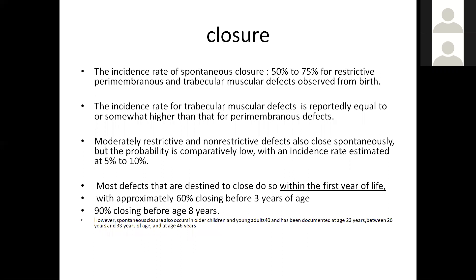Coming to closure rates: the incidence of spontaneous closure is about 50–75% for restrictive perimembranous and trabecular muscular defects. The incidence of spontaneous closure for trabecular muscular defects is reportedly equal to or somewhat higher than that of perimembranous. Moderately restrictive and non-restrictive defects also close spontaneously, but the probability is low at approximately 10%. Most defects destined to close do so within the first years of life, with approximately 60% closing by the third year of age and 90% by the eighth year. Late closure has also been reported.